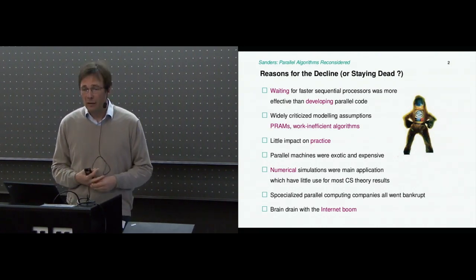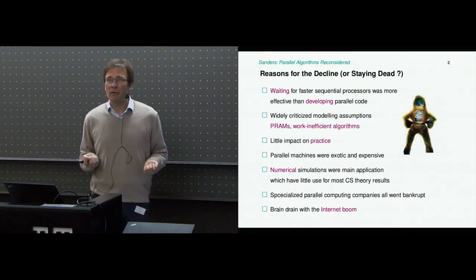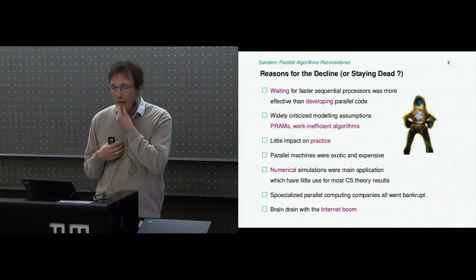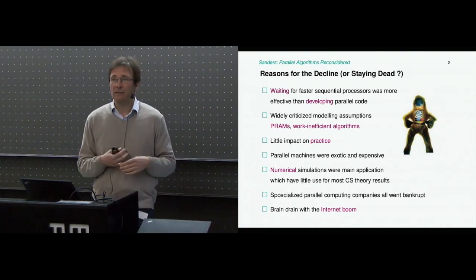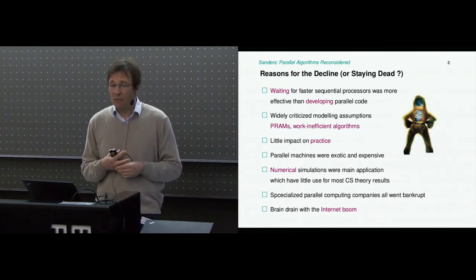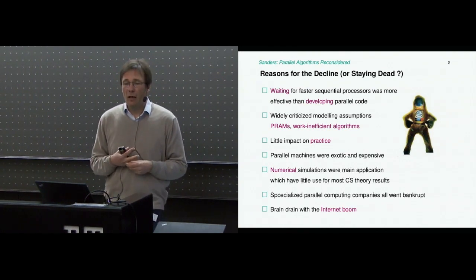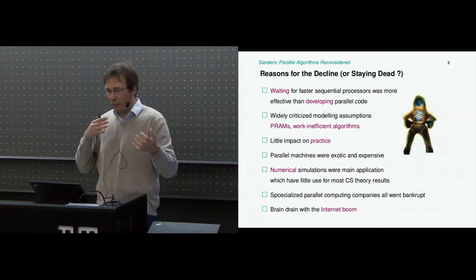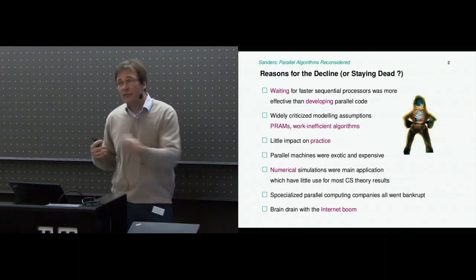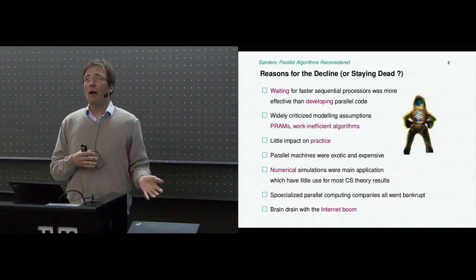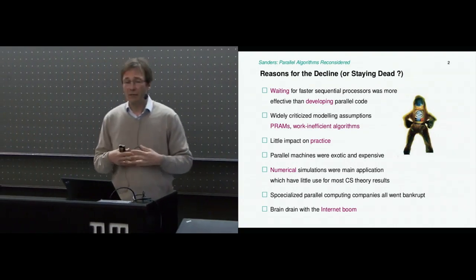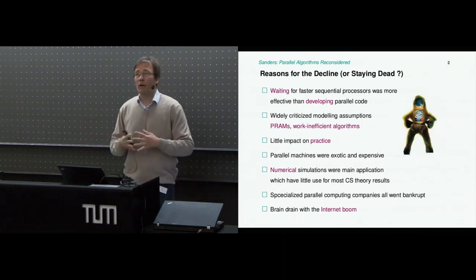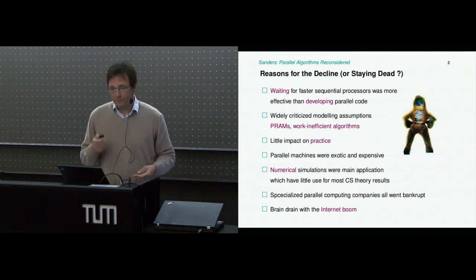There were parallel machines, but they were exotic, very expensive, and used mostly in numerical applications where there is only limited use for the results that computer scientists produce. These specialized parallel computing companies went bankrupt. What may have been even worse for our community is that the internet boom produced a huge brain drain—suddenly there was a new area where people with parallel backgrounds were quite qualified to work in. Lots of people previously working on parallel computing moved either to theory of the World Wide Web or even to startups. For example, the company ECMI was founded by people from algorithm theory.